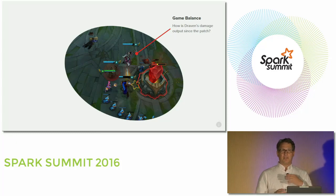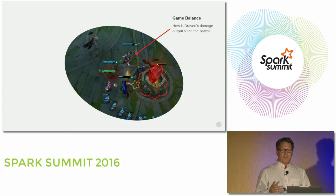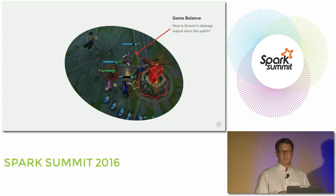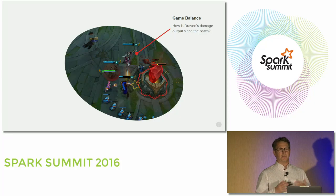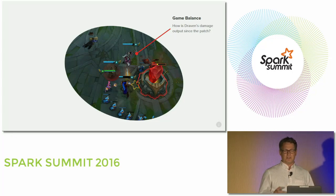We can address that. We can look at not just this particular game, but all games where Draven is participating, and we can see with our data how that character pairs up against other teams. It could be that in this particular instance, the player behind Draven is just really skilled and that's why his damage reflects that. But on balance, we really want to make sure the integrity of the game is preserved by having good game balance.